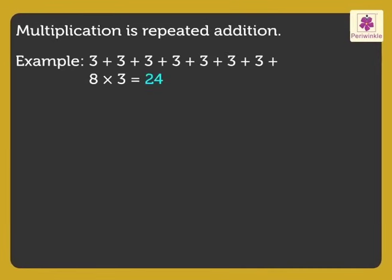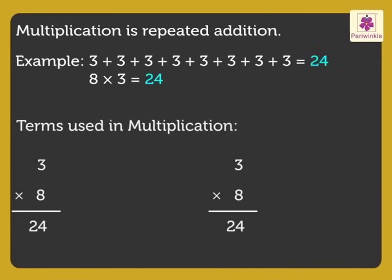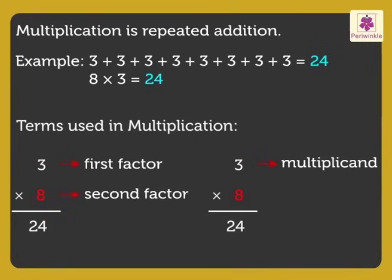Look at the board. We all know that multiplication is repeated addition. Now, let us recall the terms. Here, 3 is the first factor or the multiplicand. 8 is the second factor or the multiplier, and 24 is the product.